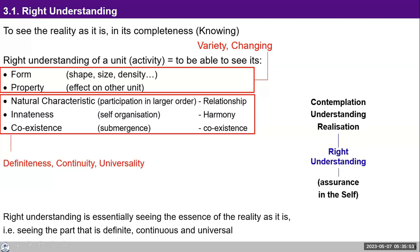But then there are deeper activities, more subtle activities in the self, which I may not be awakened to. You will find that largely we function at this form and at most property. Here you see a lot of variety and a lot of change. One human being looks a certain way, another looks a different way. One person's body is tall, another is short, one is thin, one is stout. Our focus is on form, the looks, and to some extent the property, and these keep changing.